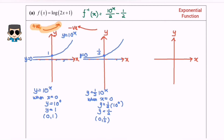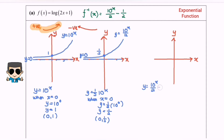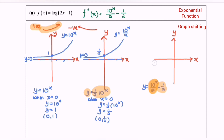Now we move to y equals 10 to the power of x over 2 minus 1 over 2. The minus 1/2 affects the value of y — we previously let that expression equal y, so we shift the horizontal asymptote downward. The horizontal asymptote moves from y equals 0 to y equals negative 1 over 2, and everything shifts downward.